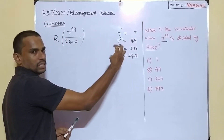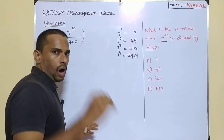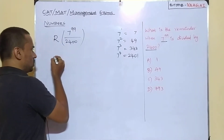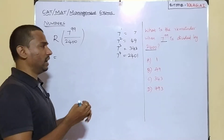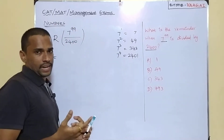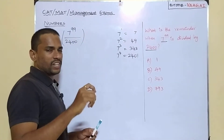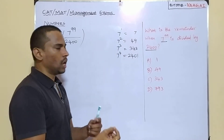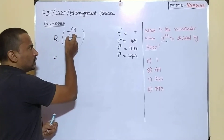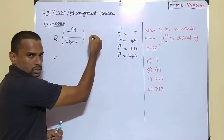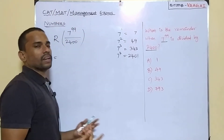Now we are going to use this as an advantage to solve the problem. Our number is 7 power 99, and we need to divide it by 2400. What we will try to do is segregate as many 7 power 4's as possible inside 7 power 99. Let us try to rewrite 7 power 99 as 7 power 4, to the power something.